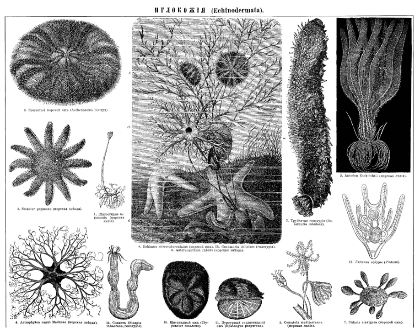Echinoderms are found at every ocean depth, from the intertidal zone to the abyssal zone. The phylum contains about 7,000 living species, making it the second-largest grouping of deuterostomes, which include the vertebrates such as birds, fishes, mammals, and reptiles. Echinoderms are also the largest phylum that has no freshwater or terrestrial representatives.